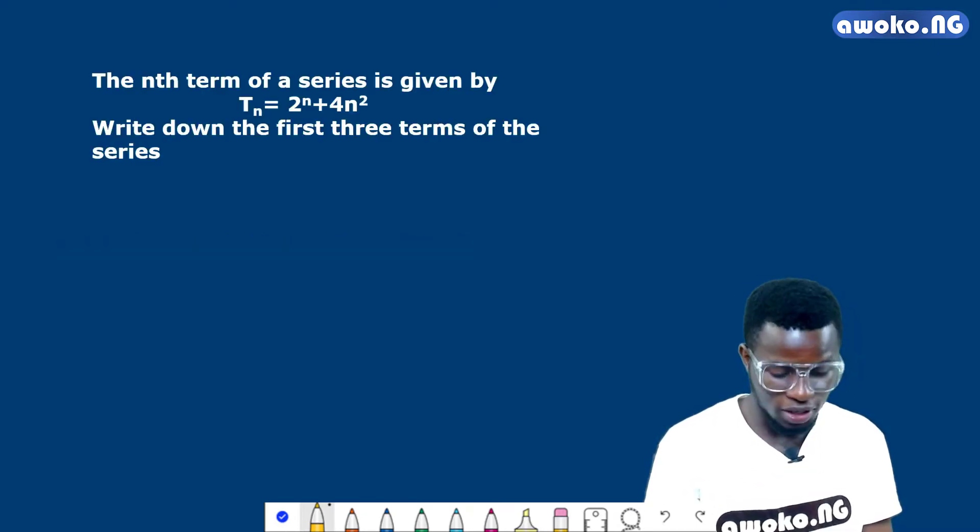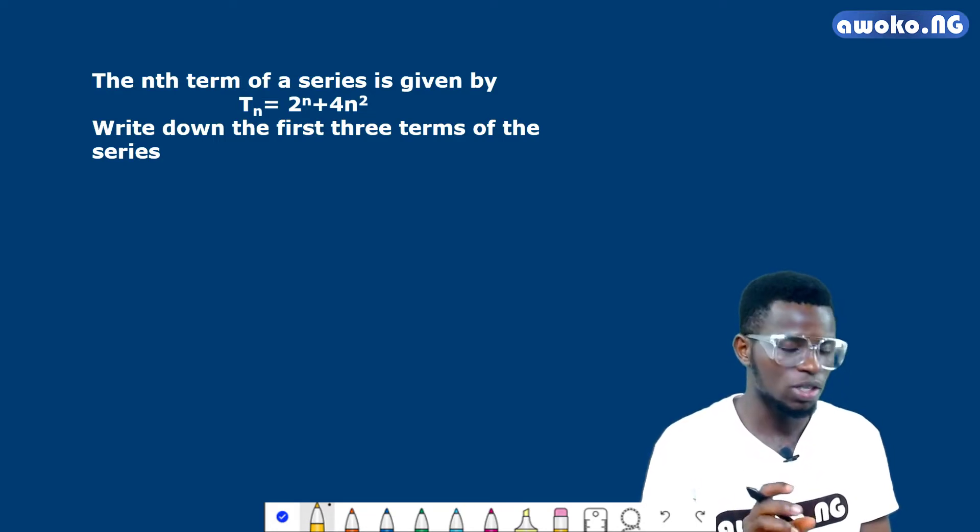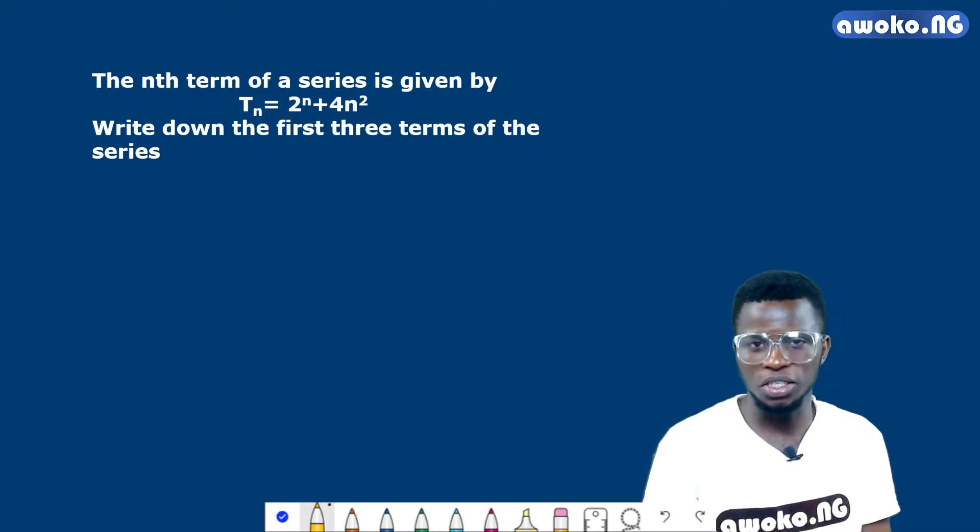The problem is: the nth term of a series is given by Tn equals 2 raised by n plus 4n squared. Find or write down the first three terms of the series.